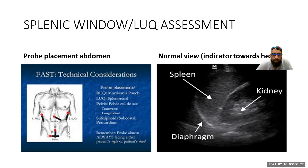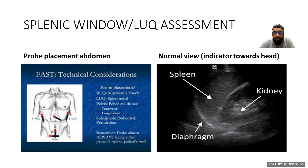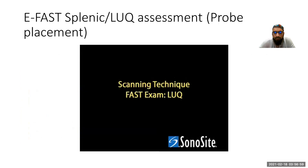Essentially what we're doing is taking a snapshot that is medial to lateral, and we make sure we can see everything. This is actually a very good image — in reality it's difficult to get because you have a lot of rib shadowing, and we'll see that in some of the images we look at now.